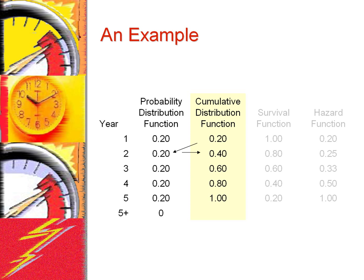The next step is to calculate the cumulative distribution function. We need to calculate the sum of the probability for the current and prior years. This is the cumulative probability from the immediate prior year plus the probability distribution in the current year. These numbers suggest that the probability of the prosthesis failing in either year 1 or year 2 is 40%.